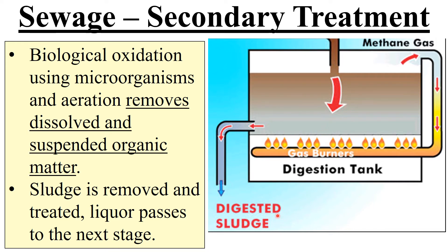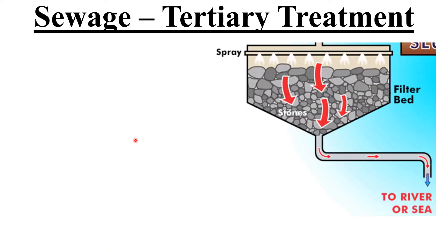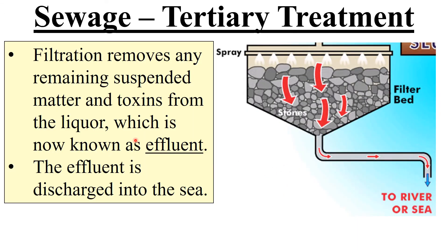You've got your sludge being separated again. So the tertiary treatment: what you have here is filtration, and often it's just through stones. Filtration removes any sort of suspended matter and toxins from the liquor. At this point it is now called effluent. The effluent is discharged into the sea. All you're doing is producing water which is not going to do any harm to ecosystems — it has not been through the water treatment process, so it's not drinkable.